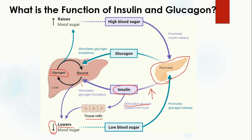As this process takes place, the blood sugar level decreases, which promotes glucagon release from the pancreas. As blood glucose decreases, the pancreas produces the glucagon hormone, which encourages the liver cells to convert glycogen back into glucose, so that the glucose level in the blood can be increased.